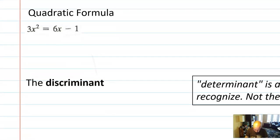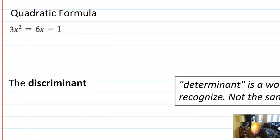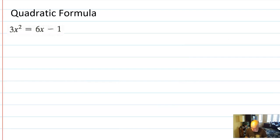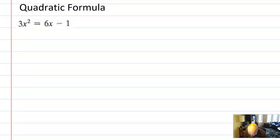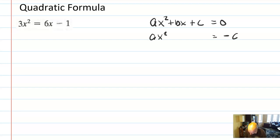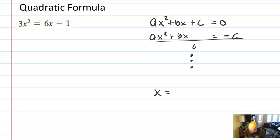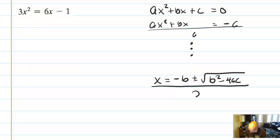The last method is the quadratic formula, which you've probably seen before. The quadratic formula actually comes from the generalized form of completing the square: starting with Ax² + Bx + C = 0 and doing the completing the square trick. We move the C to the other side, divide by A — that's where the C/A comes from — and in the end we get x = (−B ± √(B² − 4AC)) / 2A.